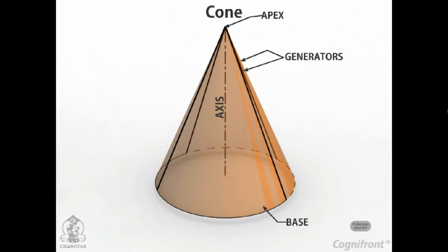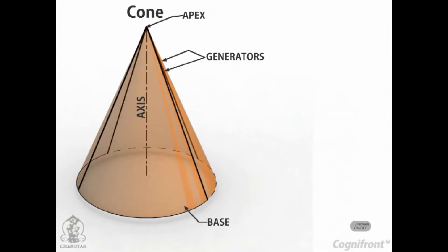Cone: A right circular cone is a solid generated by the revolution of a right-angled triangle about one of its perpendicular sides which is fixed. It has one circular base. Its axis joins the apex with the center of the base to which it is perpendicular. Straight lines drawn from the apex to the circumference of the base circle are all equal and are called generators of the cone. The length of the generator is the slant height of the cone.